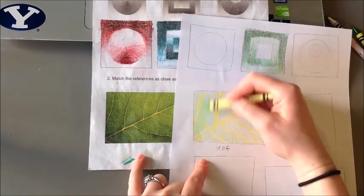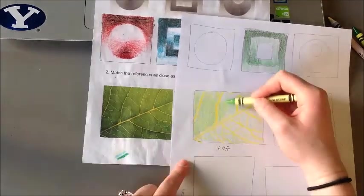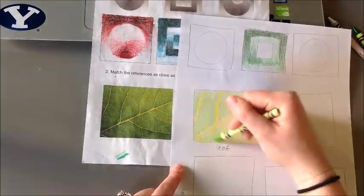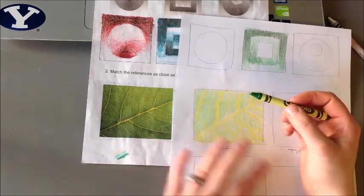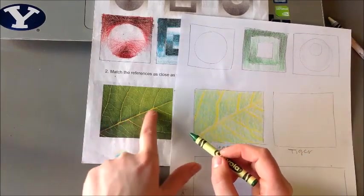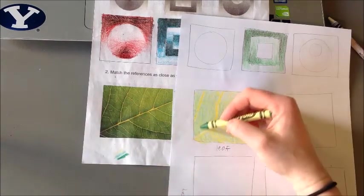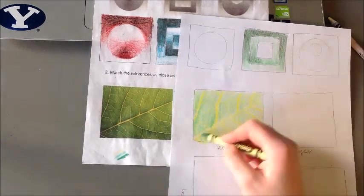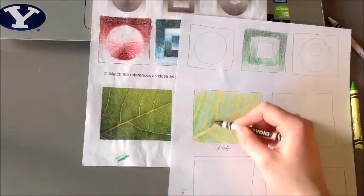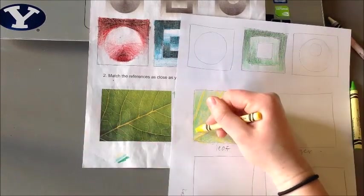So I'm going to do the same thing now with my yellow green. All right, now that I've got kind of those base colors, I'm going back in with my regular green because I notice it's really dark kind of on this left side of the picture and then fades to light.